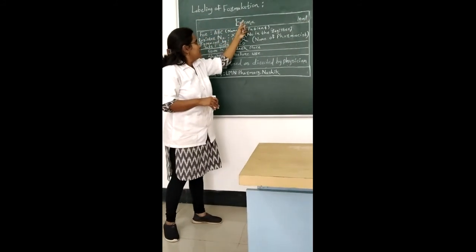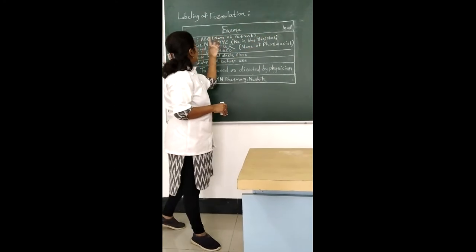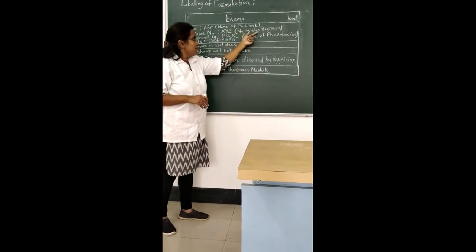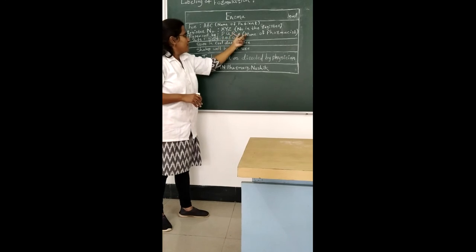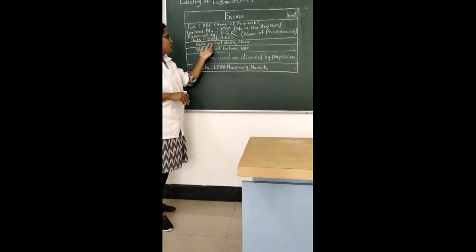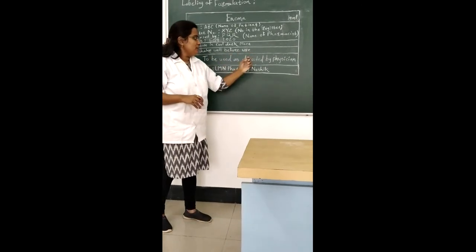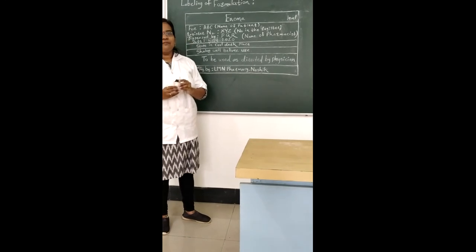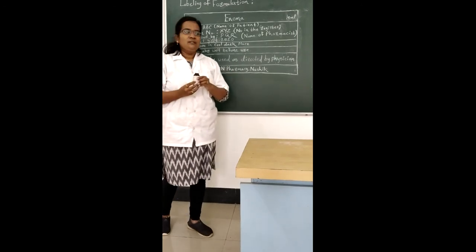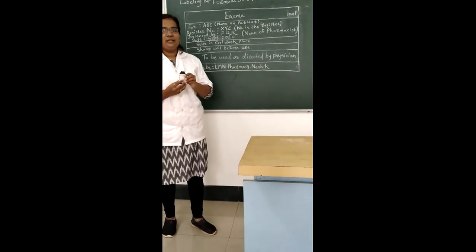Now move towards labelling the formulation enema. A preparation for rectal use is also called an enema. Label details: Enema 10 ml for APC (patient name); register number XYZ; dispensed by AQR (pharmacist name); manufacturing date September 2020; storage conditions: cool and dark place; shake well before use; to be used as directed by physician. These preparations should be shaken before use. Manufactured by Enema Pharmacy. Then 10 ml of this enema is submitted in a amber glass bottle for inspection.